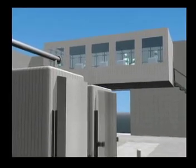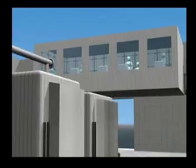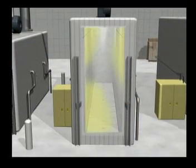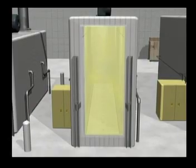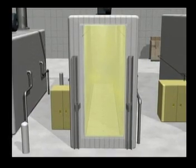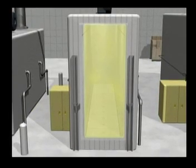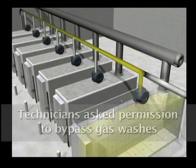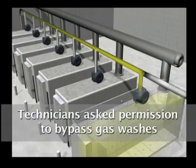Maintenance technicians arrived and performed tests, which did not reveal any problems. They then ran a test cycle that injected 120 pounds of ethylene oxide into the empty chamber, and again they could not identify a problem. As the system performed the first step of pumping ethylene oxide to the scrubber, the technicians asked the supervisor for permission to bypass the time-consuming gas washes. The supervisor agreed.